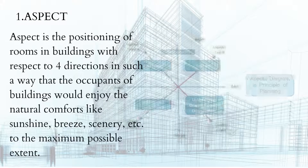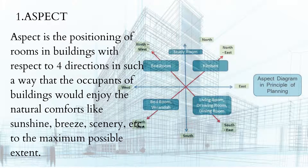Aspect: Aspect is the positioning of rooms in buildings with respect to four directions in such a way that the occupants of the building would enjoy the natural comforts like sunshine, breeze, scenery, etc., to the maximum possible extent.